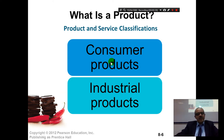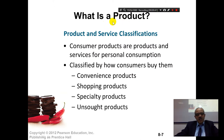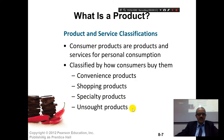Consumer products can be divided into four types, and industrial products can be mainly three types. Let's see those seven different types. We'll start with consumer products — they are products and services for personal consumption, classified as convenience products, shopping products, specialty products, and unsought products.